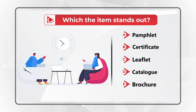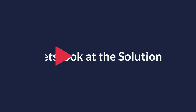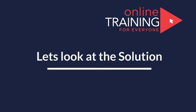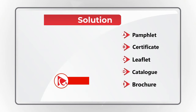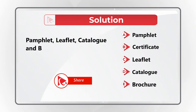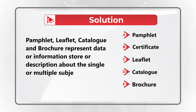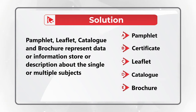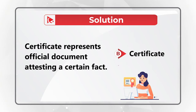Give yourself a few seconds to see if you can determine the answer. Maybe pause this video to come up with the solution. All items here represent information, a store or description about single or multiple subjects, with the exception of the word certificate. Certificate represents an official document attesting a certain fact.